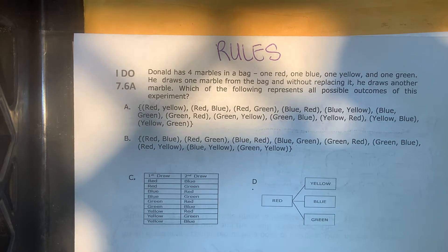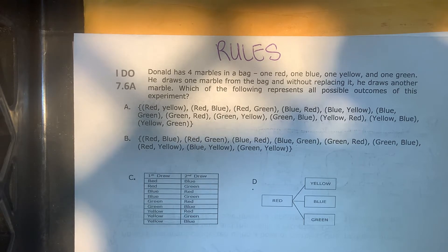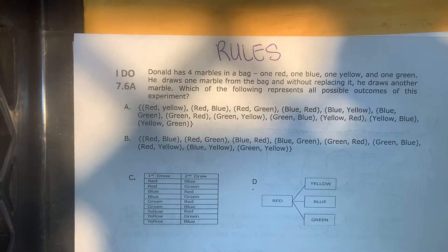Answer choice C: first draw red, second draw blue, then red-green, blue-red, blue-green, green-red, green-blue, yellow-red, yellow-green, yellow-blue. Or answer choice D: red, yellow, blue, green.